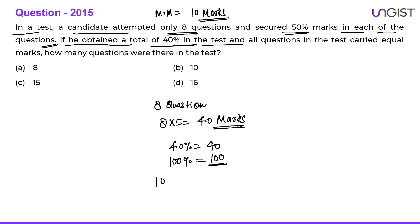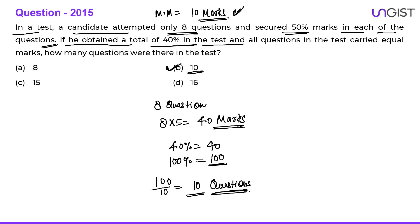So 100 divided by 10 — because per question we assumed the maximum marks are 10 — gives us 10 total questions in the question paper. It means the question paper has 10 questions in total. Option B is the correct choice. Again a question based on common sense only.